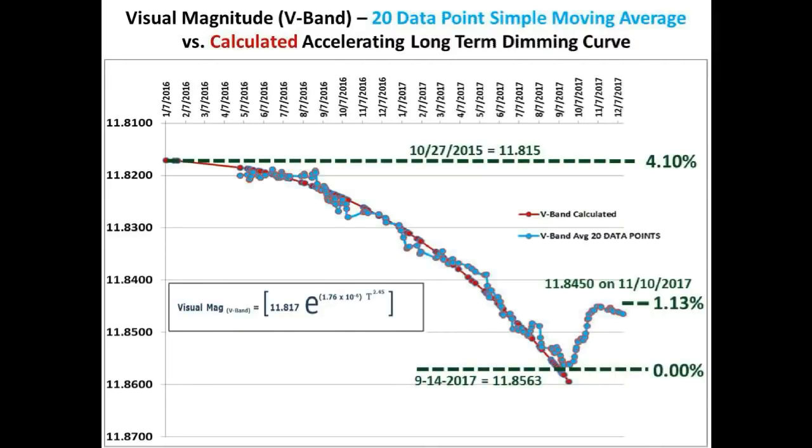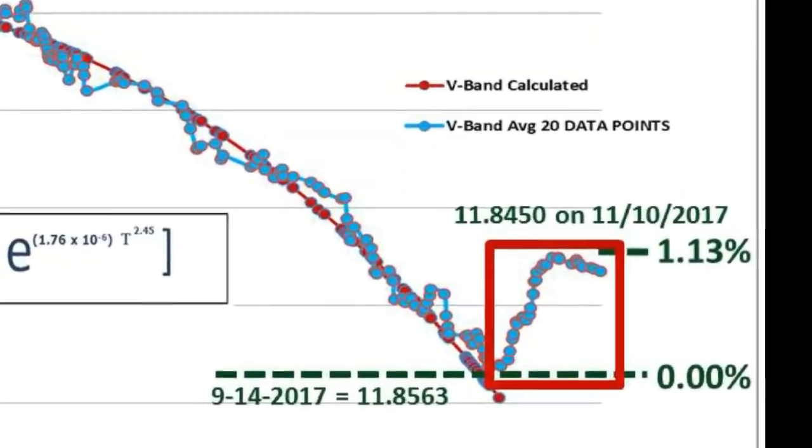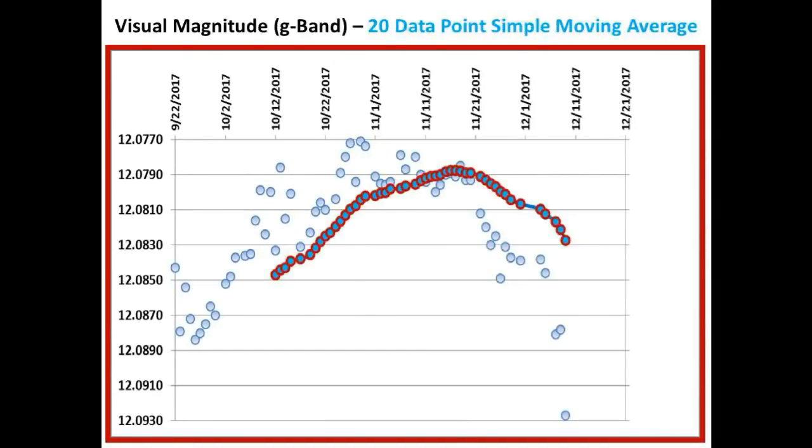Now we will look at the long-term light curve of Tabby's Star and focus in on the last 85 days, which incorporates both the brightening event as well as the current dimming event. So this is the status of the long-term light curve we showed on December 9th, and we are using the 20 data point simple moving average of the G-band measurements to track the long-term flux trend of Tabby's Star.